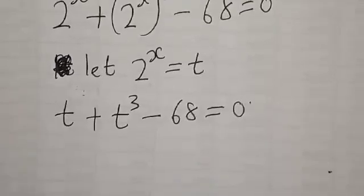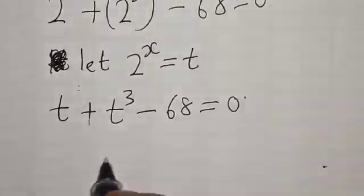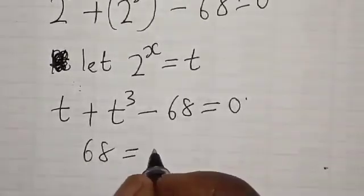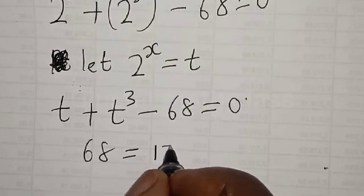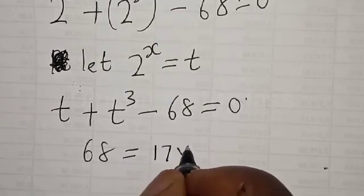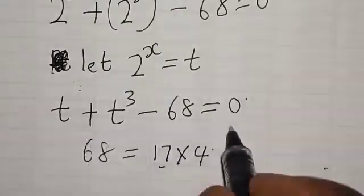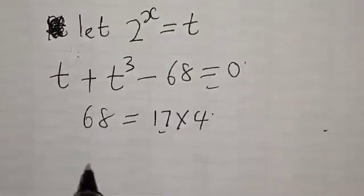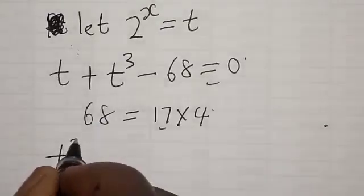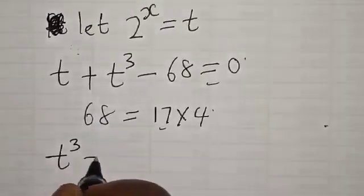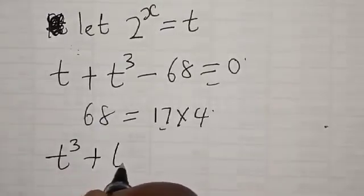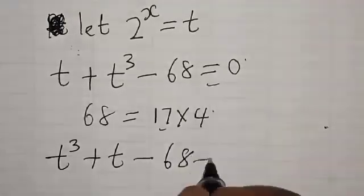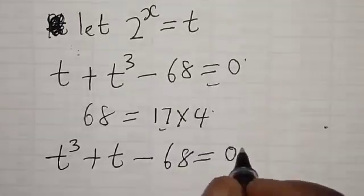Now remember, 68 is the same thing as 17 times 4. Let's rewrite this equation. Let t equal 2 raised to the power x. We have t cubed plus t minus 68 is equal to 0.